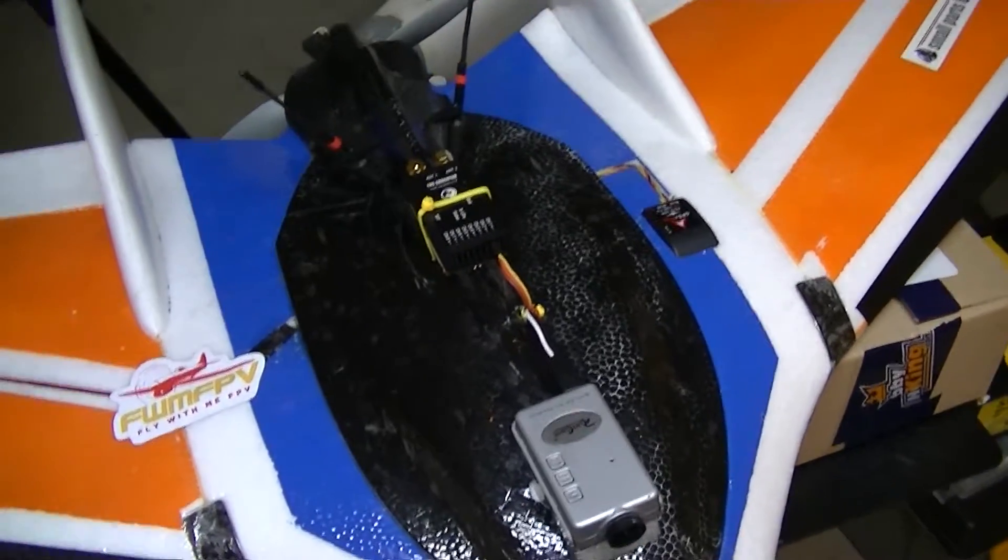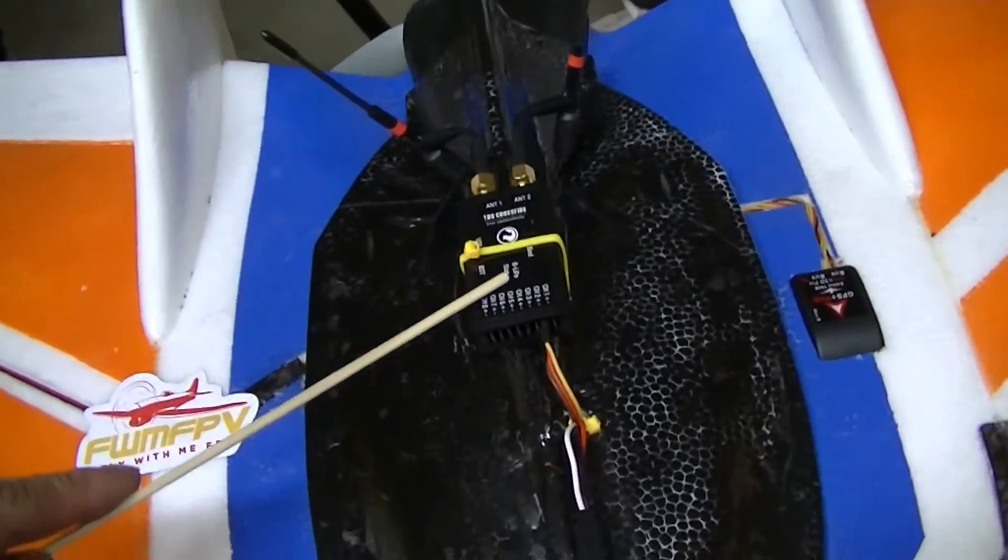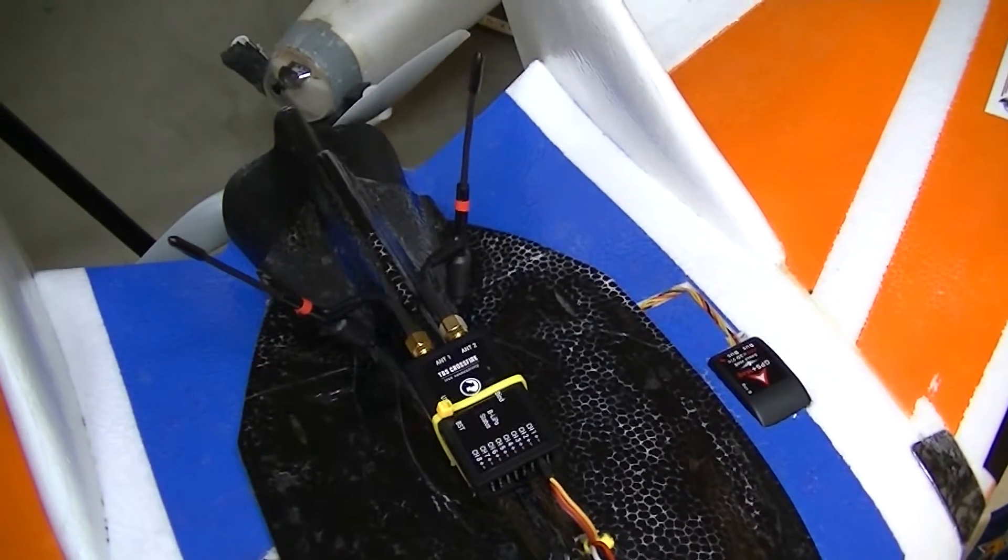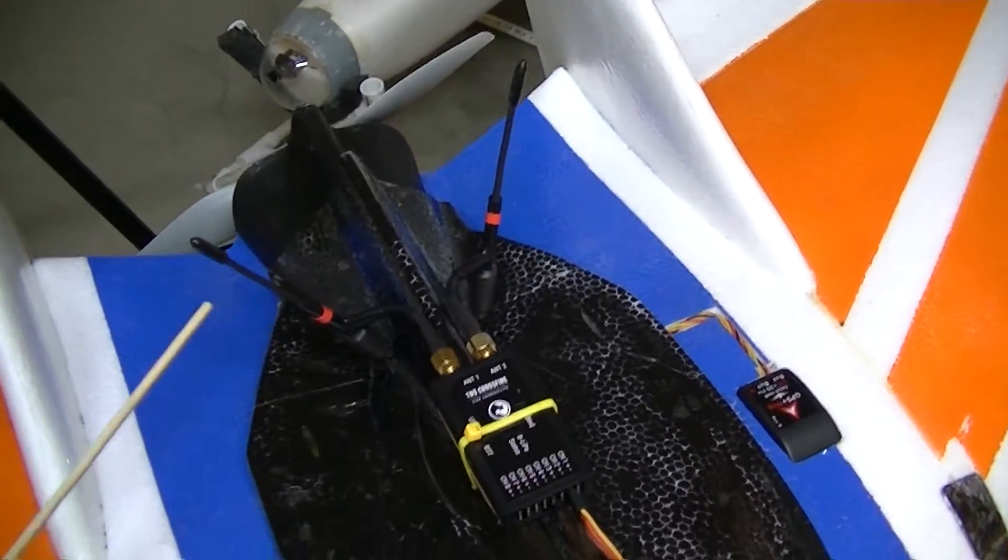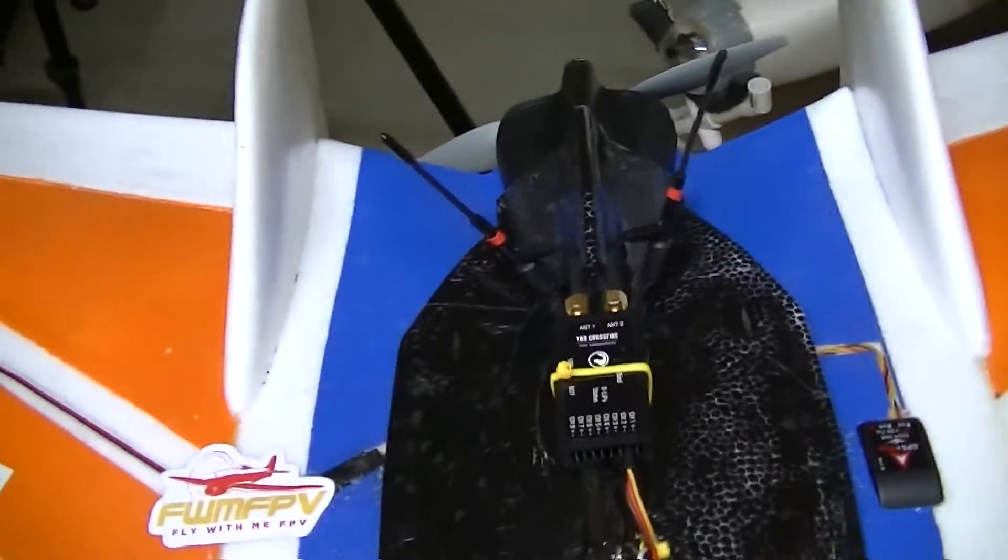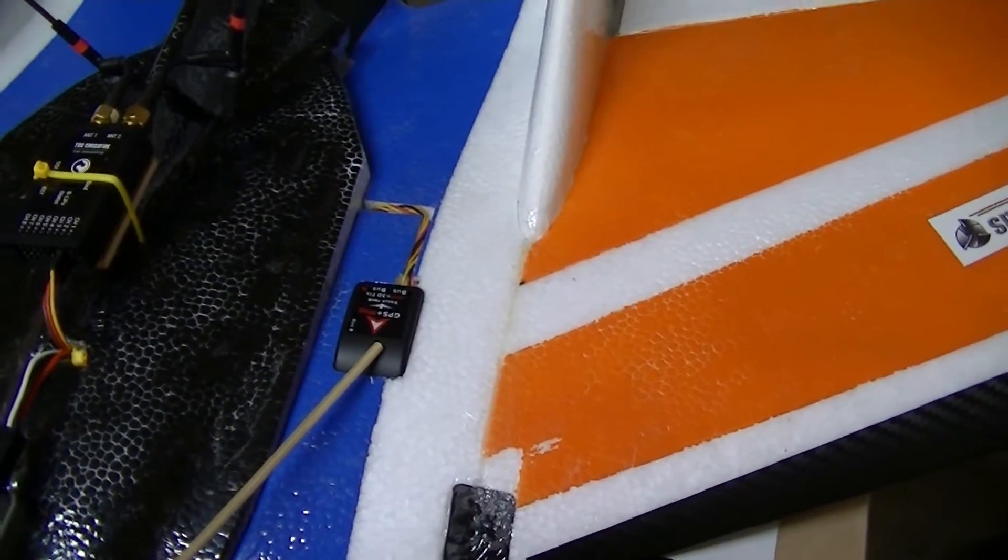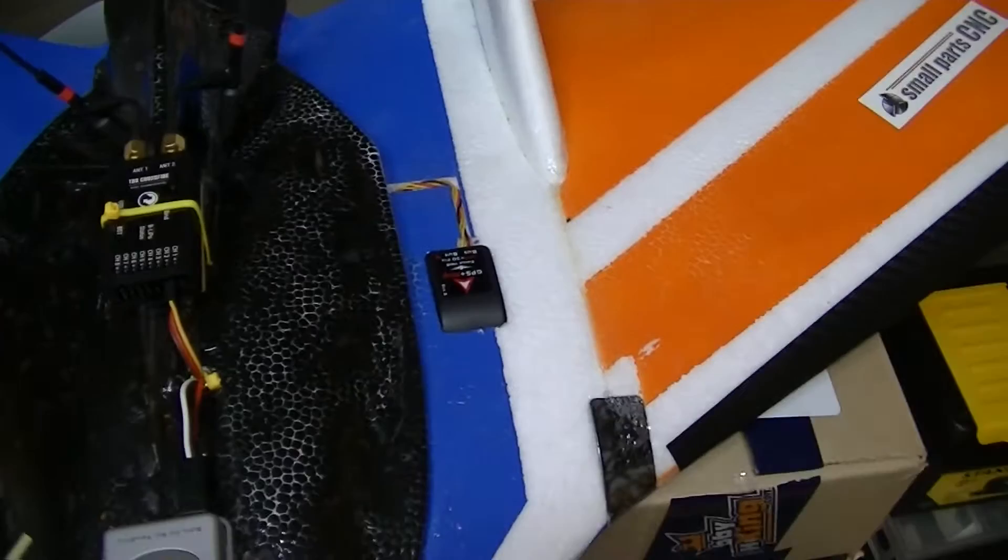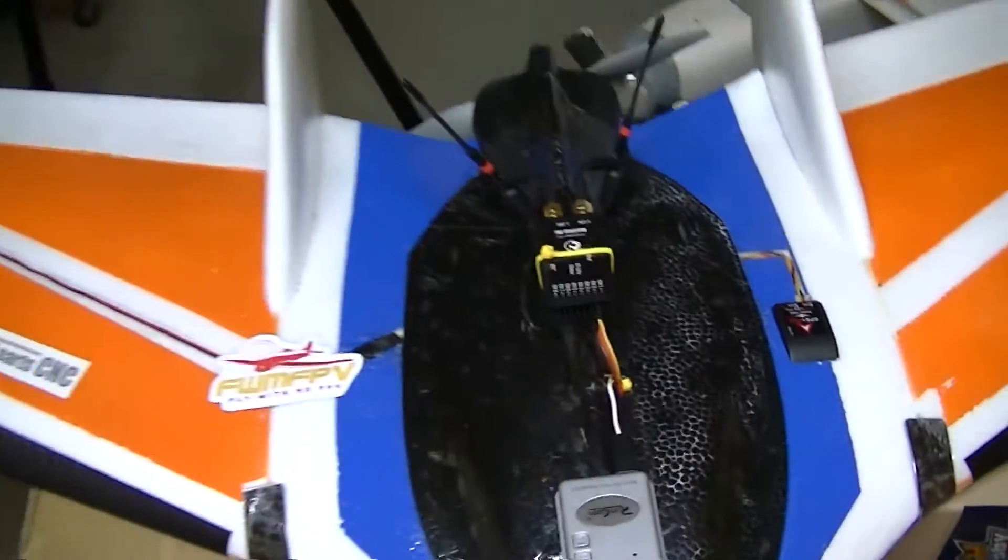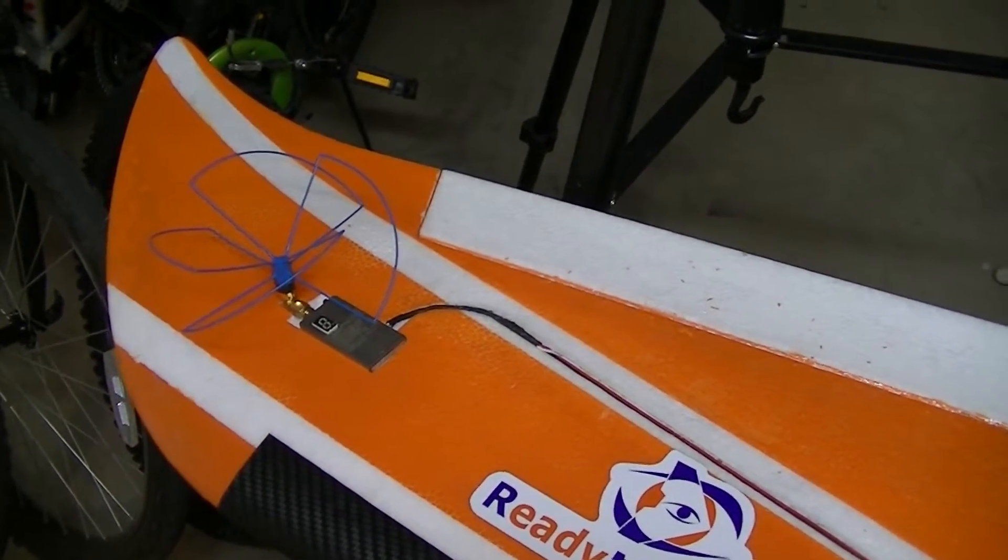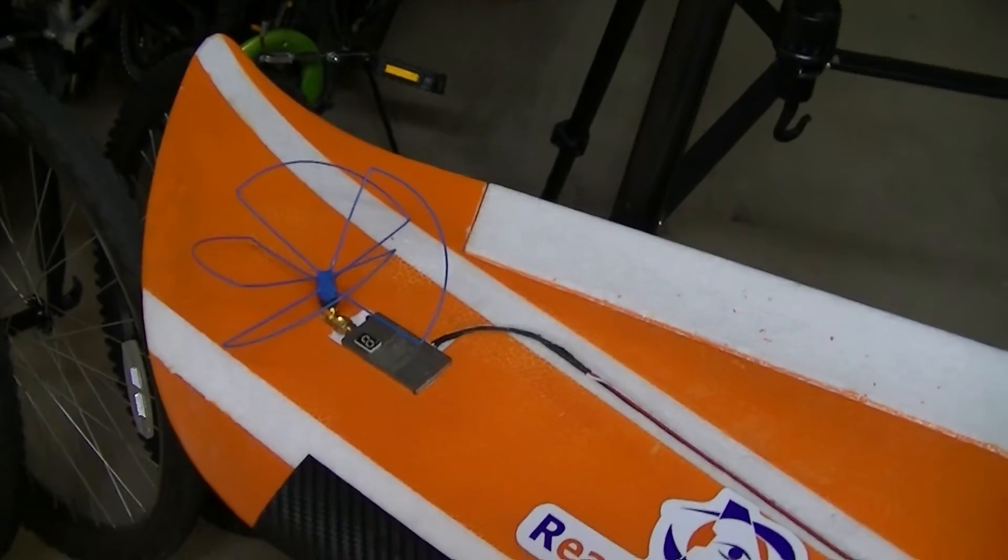This is equipped with a TBS Crossfire diversity receiver. See the antennas? These are stock antennas. I have the higher gain antennas but I haven't put them in yet. GPS—I am using an Eagle Tree Vector on this setup. And it's a 1.3 600 milliwatt VTX with a Blue Beam antenna.